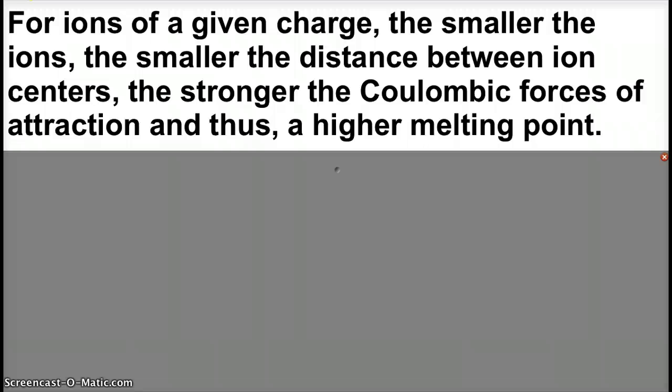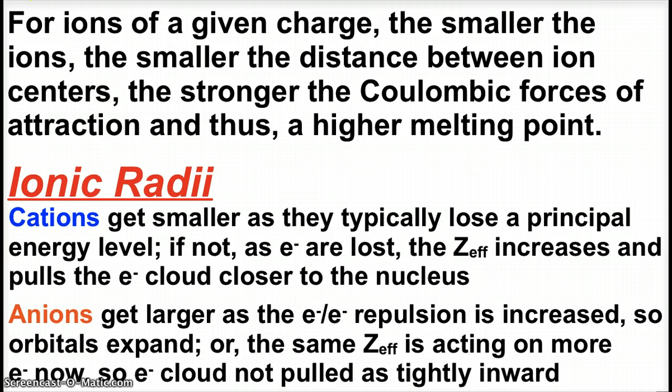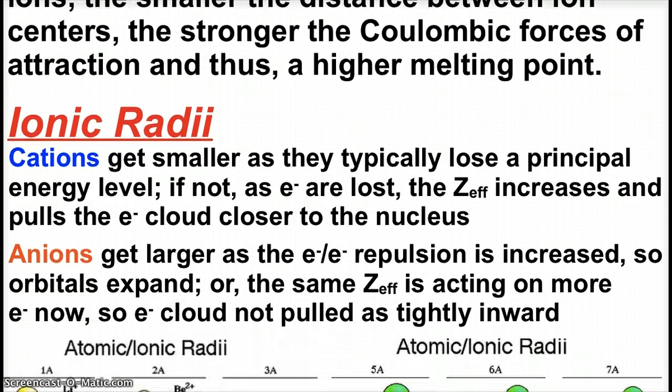Because Coulomb's law also talks about distance, we remember the closer that ion centers are, stronger attractions, higher melting points. The farther they are, lower melting points because of the lower forces of attraction. So we look at ionic radii.